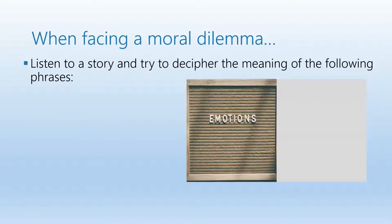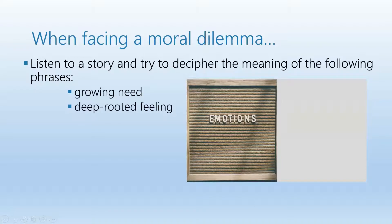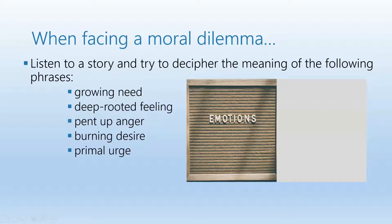But it's not just that. Not only do we have problems thinking about moral dilemmas, we probably go through an emotional turmoil as well. So things going on in our hearts are as important as those going on in our minds. Let's listen to a story and try to decipher the meaning of the following phrases: 'growing need,' 'deep-rooted feeling,' 'pent-up anger,' 'burning desire,' 'primal urge,' and 'heartfelt plea.'